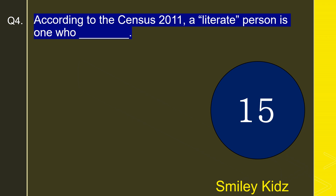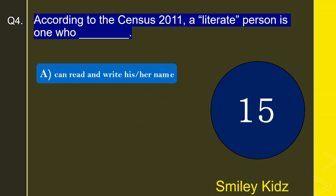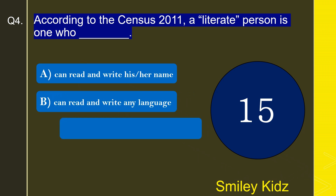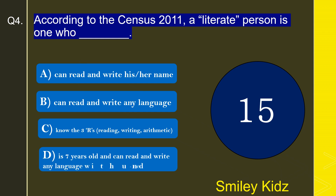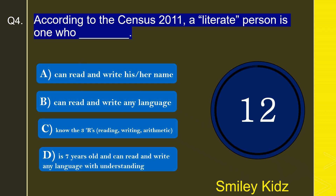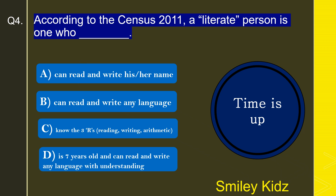Moving to question number 4: According to the census 2011, a literate person is one who — can read and write his or her name, can read and write any language, knows the 3 R's (reading, writing, arithmetic), or is 7 years old and can read and write any language with understanding? The correct answer is: is 7 years old and can read and write any language with understanding.